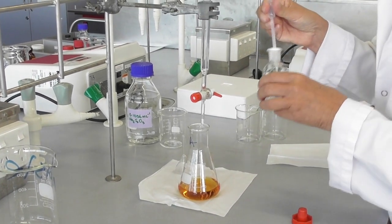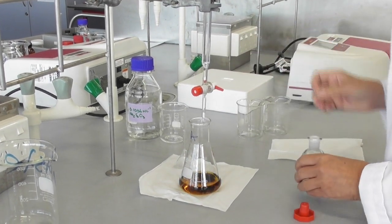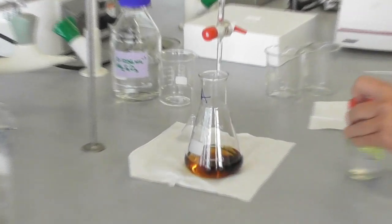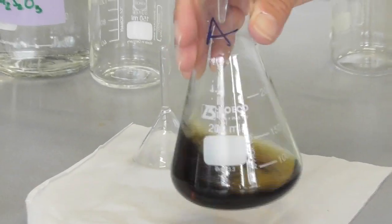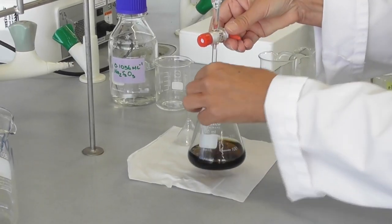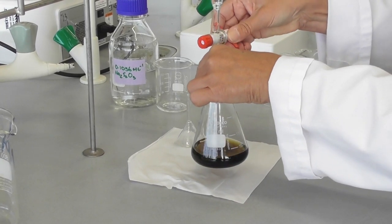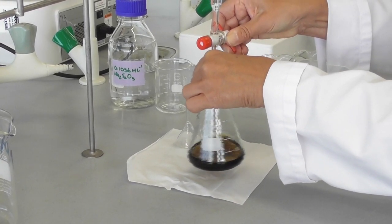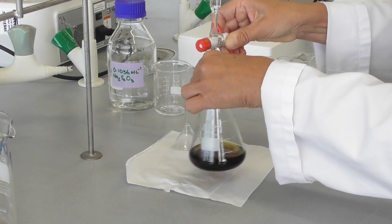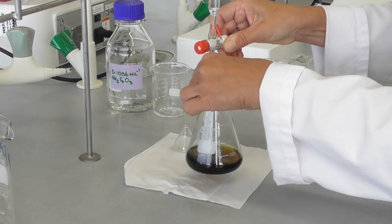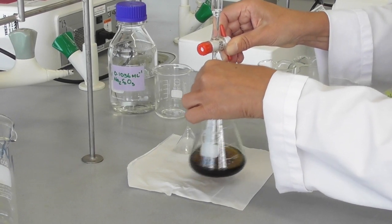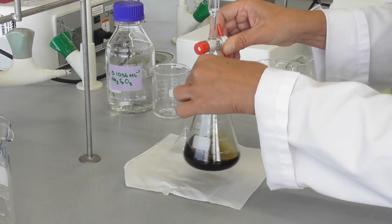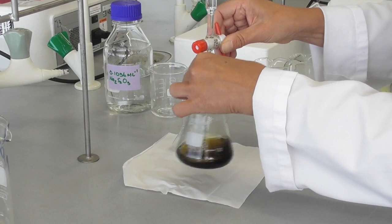I add about one milliliter of starch solution which turns the mixture quite dark, and as I'm nearing the end point I add the thiosulfate solution very slowly at this point, ideally drop by drop, while still constantly swirling.